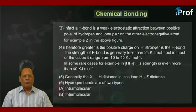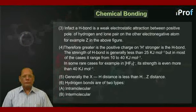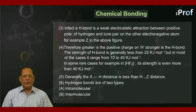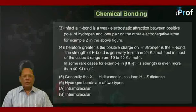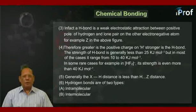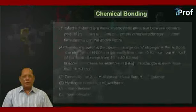Number five: generally, the X–H distance is less than the H–Z distance. Sixth: hydrogen bonds are of two types — A. Intramolecular and B. Intermolecular.